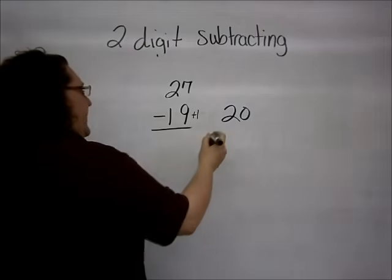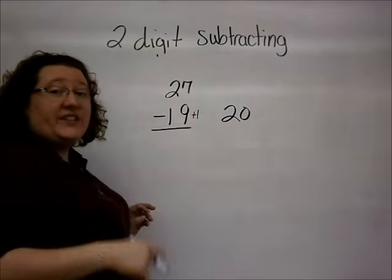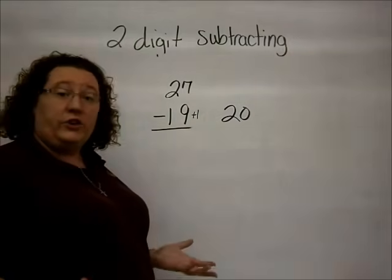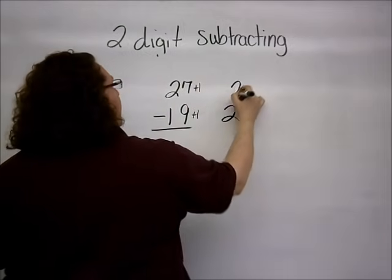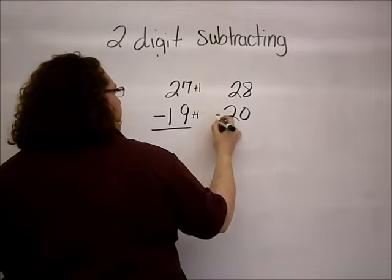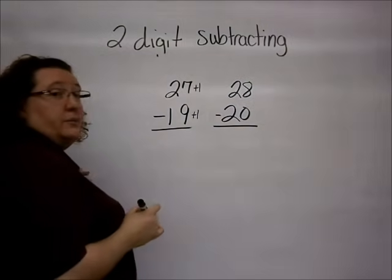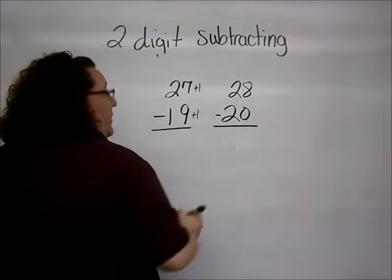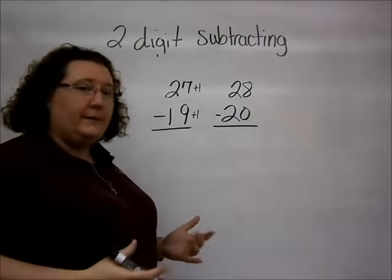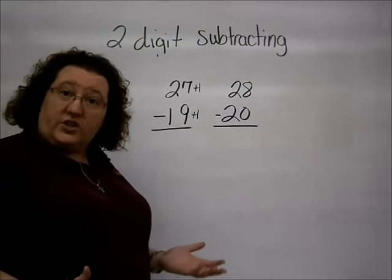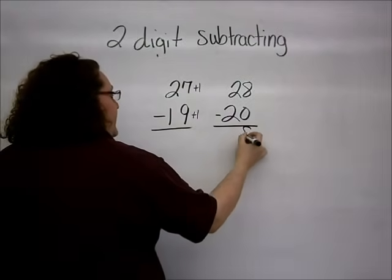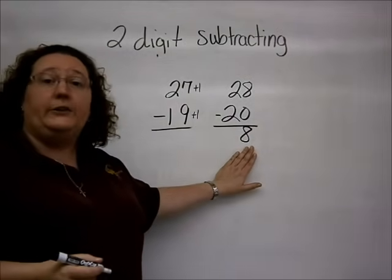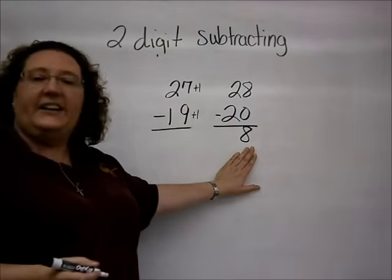And I put that there as my little reminder because I am actually going to do the same thing to the number that I have on top. So, I am going to take 27 and add 1, and I end up with 28. Now, when I subtract, you will notice I end up with a subtraction problem that I do not have to borrow to solve, which makes it a whole lot easier. And again, I end up with the same answer as I did in the traditional method. I still end up with 8.